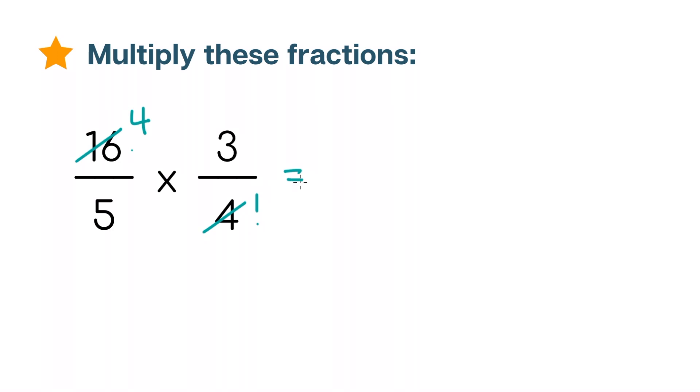Now let's multiply with the simplified numbers and you'll notice it's a lot easier this time around. 4 times 3 is 12 and 5 times 1 is 5. So that is our answer 12 over 5.